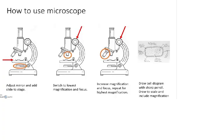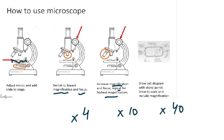To use a microscope: adjust the mirror or switch on the light, add the slide to the stage, switch to the lowest magnification and focus. Then increase the magnification and focus, repeating for the highest magnification. The different magnifications are ×4, ×10, and ×40 — these are the ones you need to know for O-levels and A-levels.